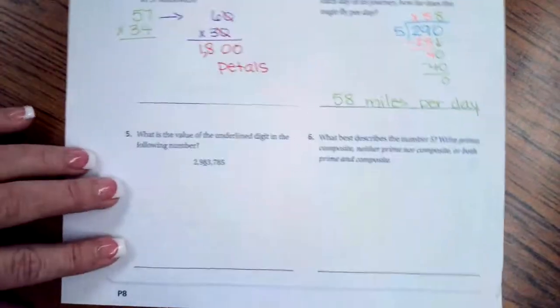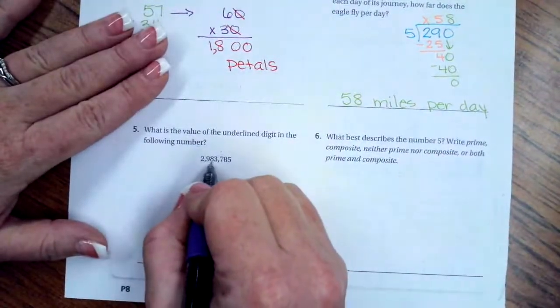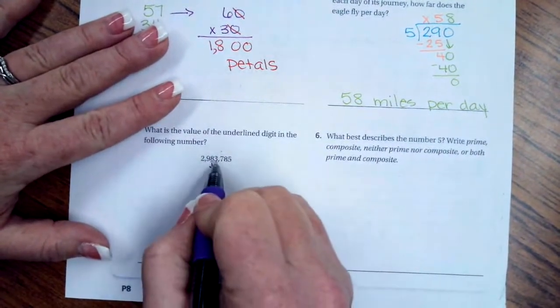We're going to go ahead and do number five. It says, what is the value of the underlined digit? Well, the underlined digit is an eight one. And then I have one. And then I have one.